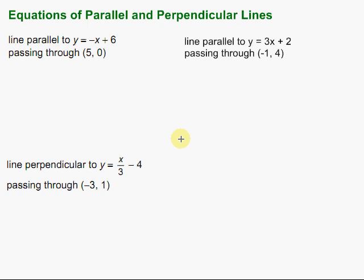In this video, we're going to take a look at finding equations of parallel and perpendicular lines. Let's look at an example. Parallel lines are ones that will never intersect — their slopes are the same. So if we can find the slope of a line, we can make a line that's parallel to it by using the same slope.